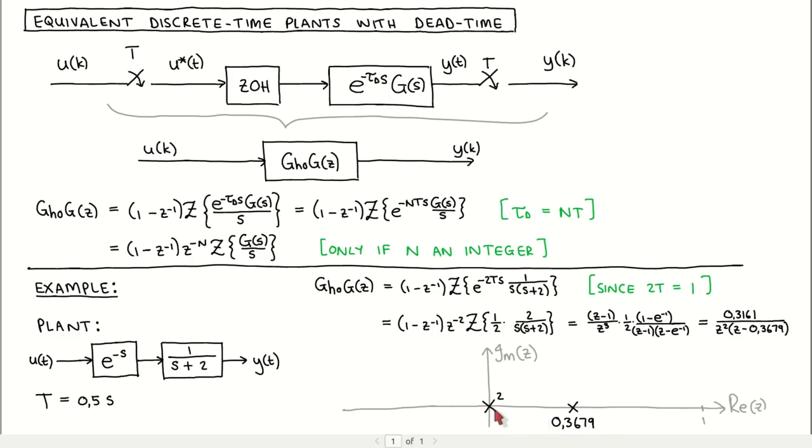The ease with which we can model time delays in discrete time systems compared to continuous time systems is one of the advantages of using discrete time models for dynamic systems.